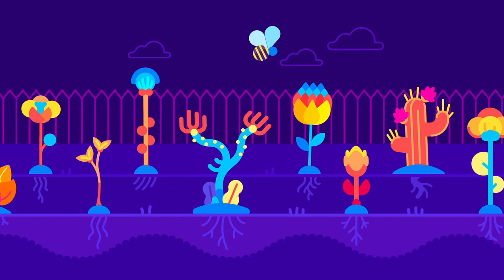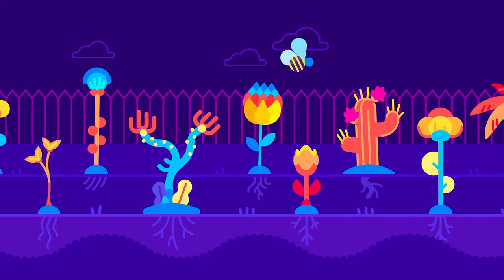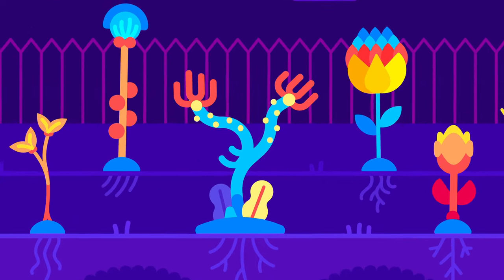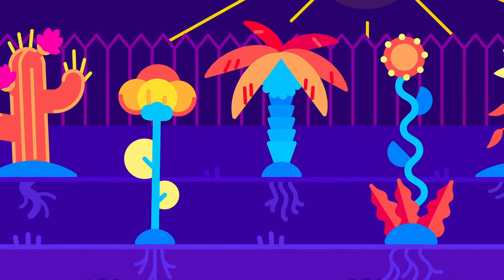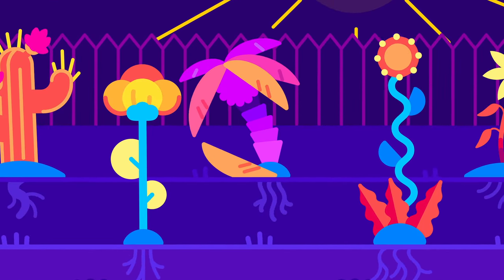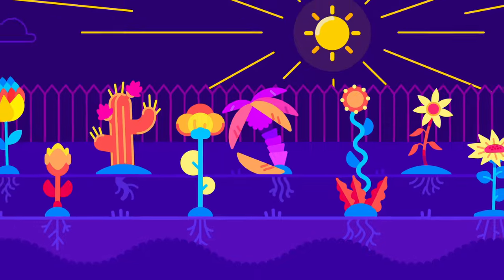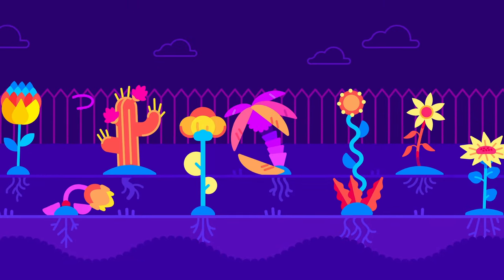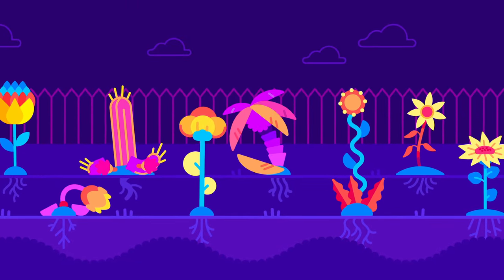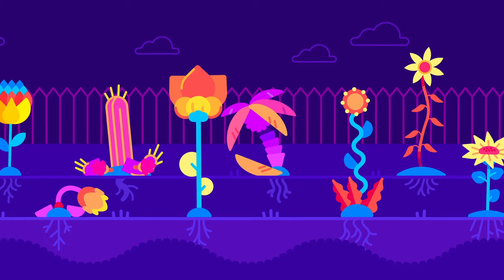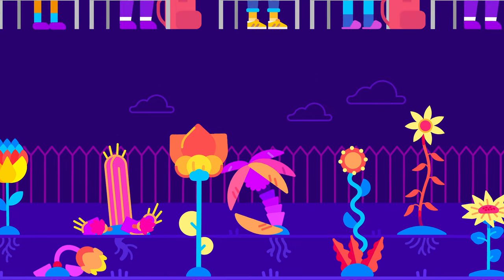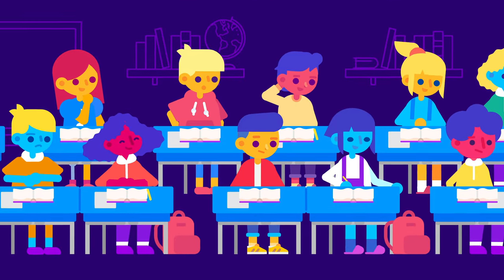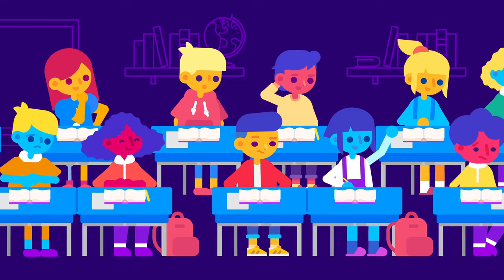Take a look at this beautiful garden. It's full of a wide variety of plants. Some are flourishing, but others are not doing so well. Even if they receive the same amount of sun and water, all plants respond differently depending on their type and where they have been planted. Just like plants in a garden, students in a classroom are different and unique.